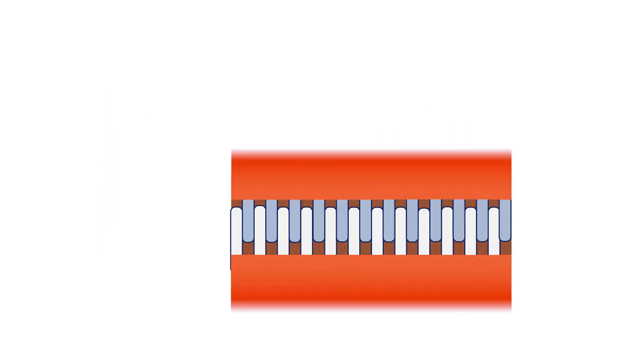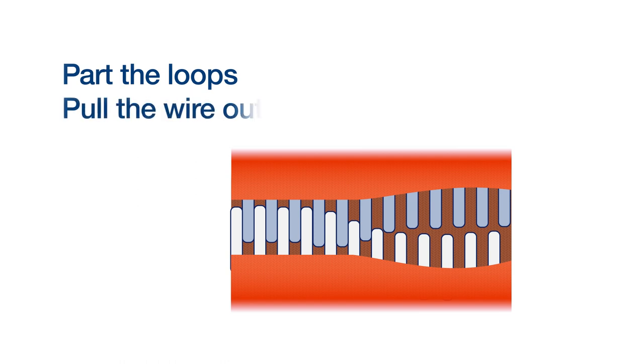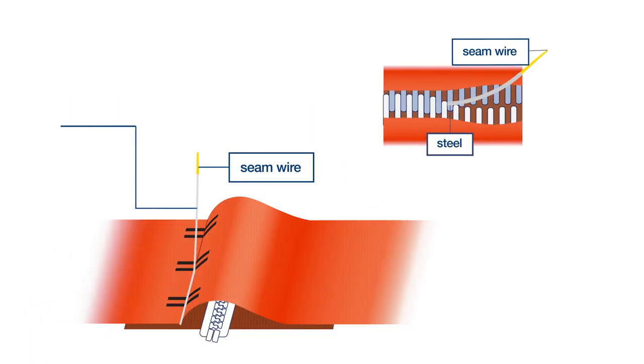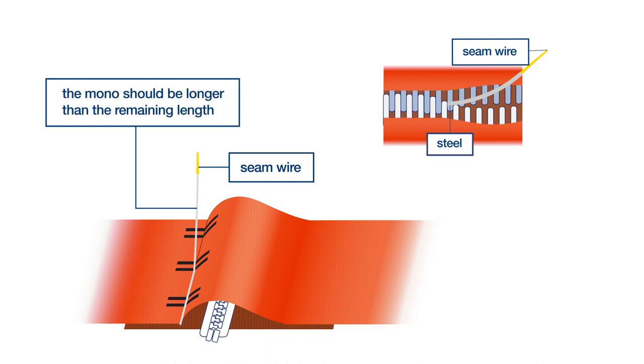When it becomes too difficult to insert the metal wire, part the loops and allow the wire to exit the seam. Slowly pull the wire out of the seam and then the mono, allowing enough mono to complete the remaining length of seam and extra to finish off.